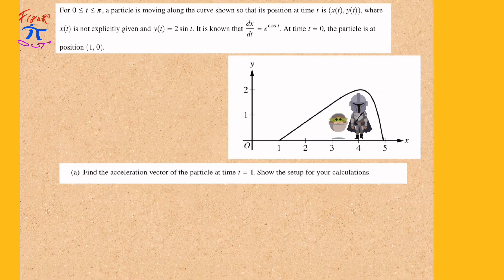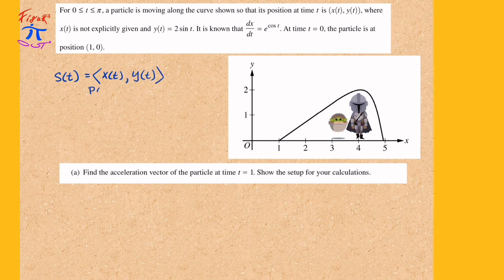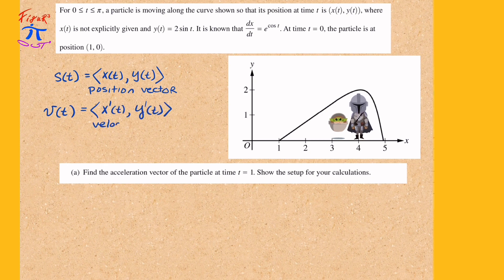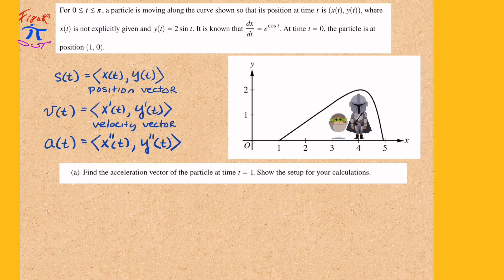The first part of this question asks us to find the acceleration vector of the particle at time t equals 1. In order to do that, we need the second derivative. The position vector is given by x of t and y of t — we can call that s of t. Taking the derivative of the components of this vector gives us the velocity vector v of t, with components x prime and y prime. To get the acceleration vector, we take the second derivatives of x and y respectively, then plug in t equals 1.